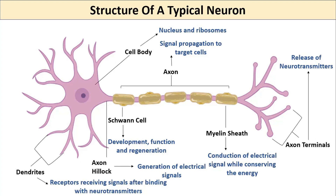The propagating electrical signal should be lightning fast, so instead of a continuous flow, the signal needs to jump. This jumping is performed with the help of nodes between sections of myelin sheath, called nodes of Ranvier. This specialized conduction of the electrical signal, where the signal jumps between the nodes, is called saltatory conduction.